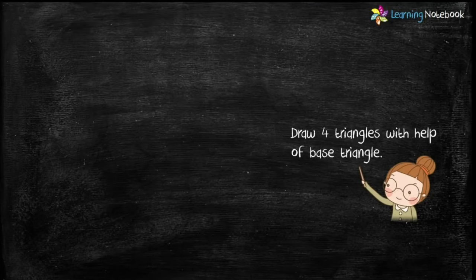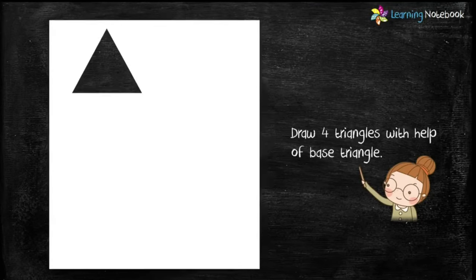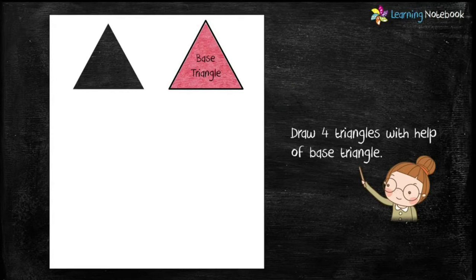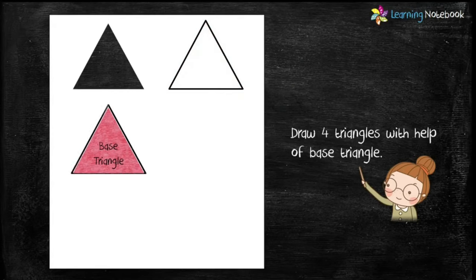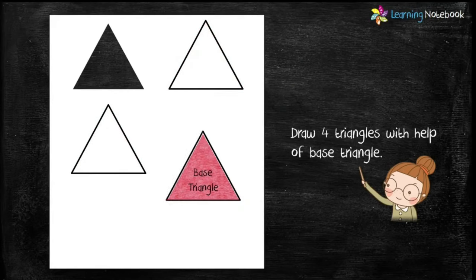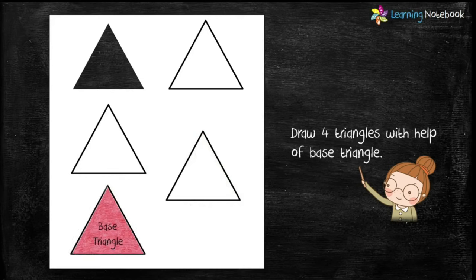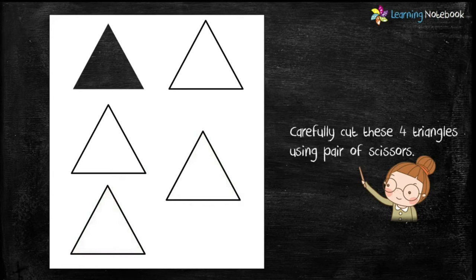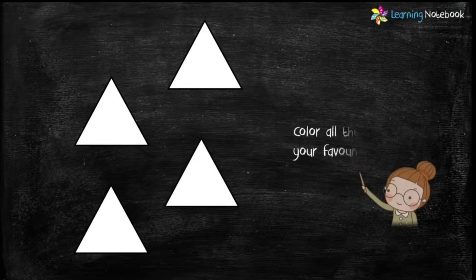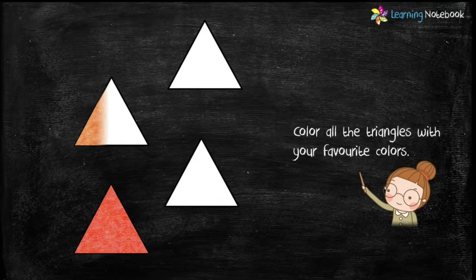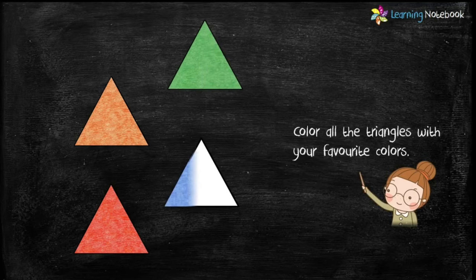Now using this base triangle, draw four triangles on the same sheet as you can see here. Students, all these four triangles are congruent triangles. Next, carefully cut these four triangles with the help of a pair of scissors. Then color all these triangles with your favorite colors.